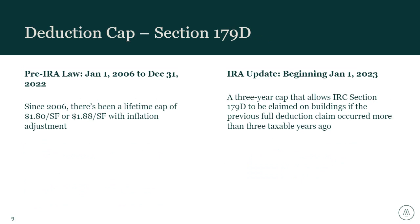The IRA also changed the deduction cap. Since 2006, there has been a lifetime cap on 179D deductions equivalent to $1.80 per square foot. Once claimed, you were unable to take 179D again even after additional energy-efficient upgrades. Now there is a three-year cap: you can take further 179D deductions as long as the previous full deduction was claimed more than three taxable years ago. This has significant ramifications for designers of government facilities like schools, where renovations are often phased — those projects would now be reopened for future 179D studies.